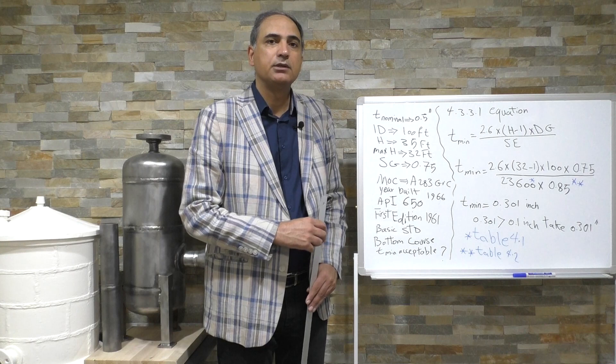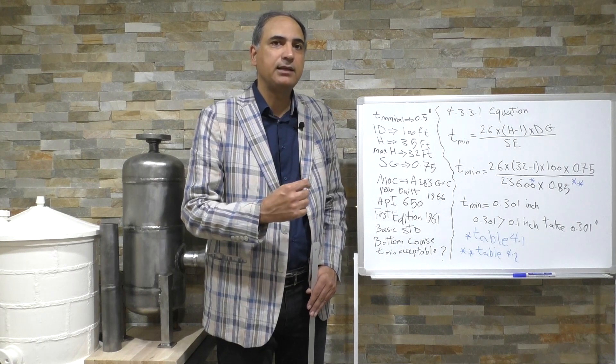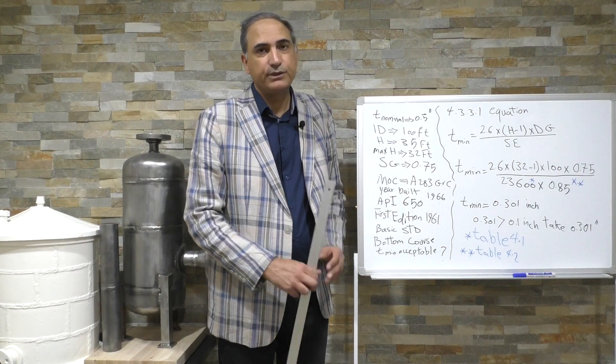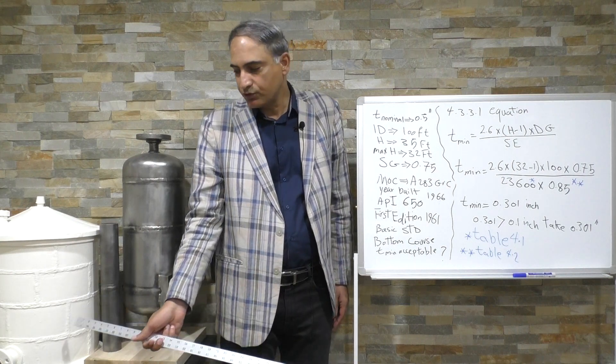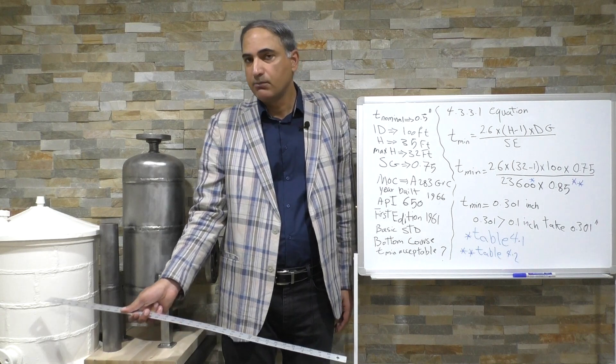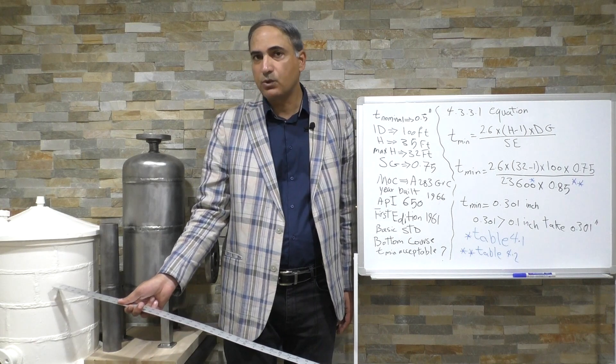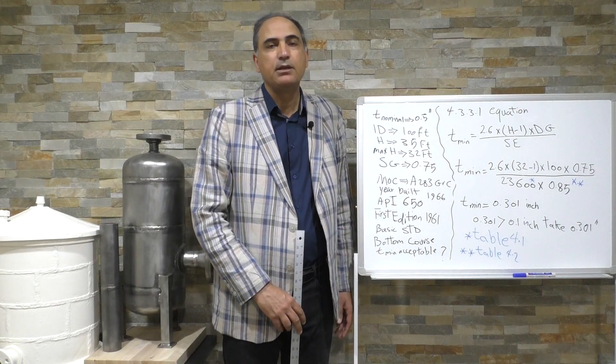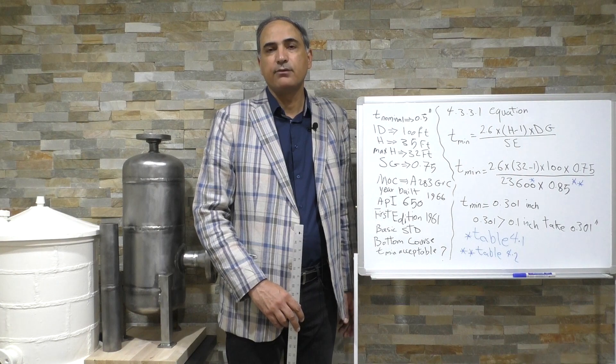So it was a sample exam question, how to calculate minimum acceptable thickness. For here it's for first shell course but the problem might ask you to calculate for second course, might ask you to calculate for third course, fourth course, or fifth or sixth. So this was a sample problem, see you guys in the next video.